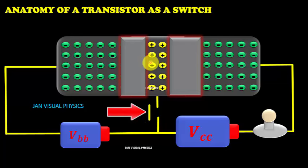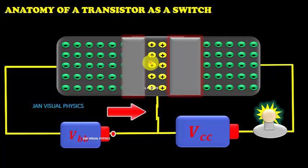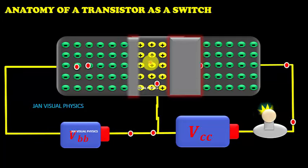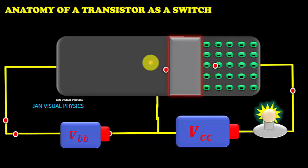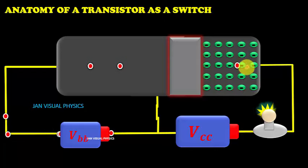When a positive signal is given to the base of the transistor, emitter base junction becomes forward biased and depletion region of emitter base junction vanishes. This decreases the resistance of the transistor and current starts through the transistor and transistor behaves like an ON switch.